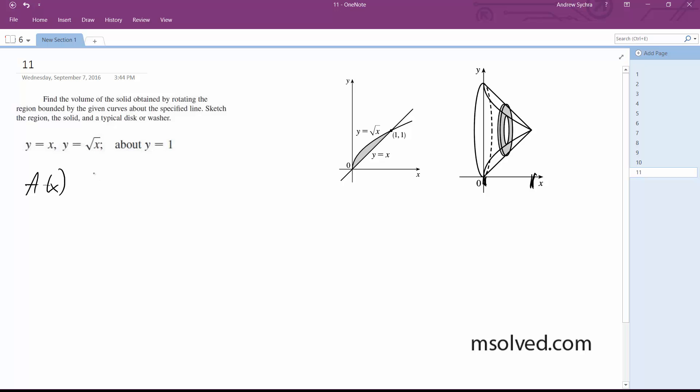our initial area before we wrap it around, about y equals 1, is going to be pi times 1 minus x squared minus pi times 1 minus square root of x squared. So this gives us pi.